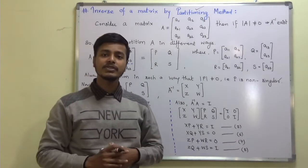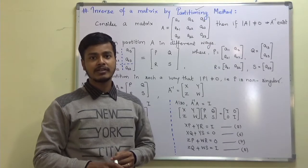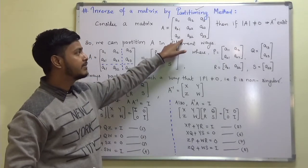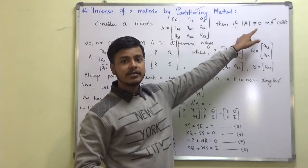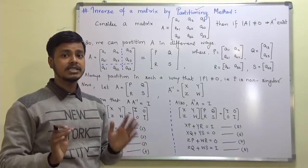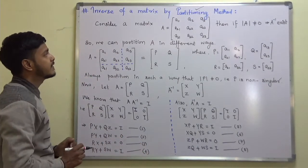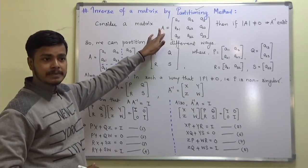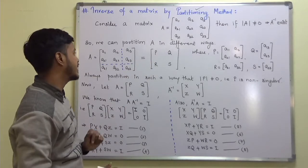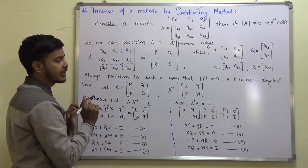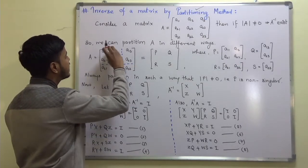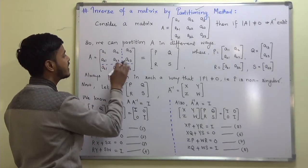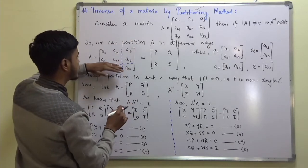As you all know, whenever we have to find out the inverse of a matrix, the matrix should be non-singular, meaning its determinant should not be equal to zero. I have considered a general matrix of three by three, and if its determinant is not equal to zero then A inverse exists. Once the determinant of the given matrix is nonzero, we can partition this matrix in different ways. I have partitioned it like this: two by two, two by one, one by two, and one by one, calling these partitions P, Q, R, and S.